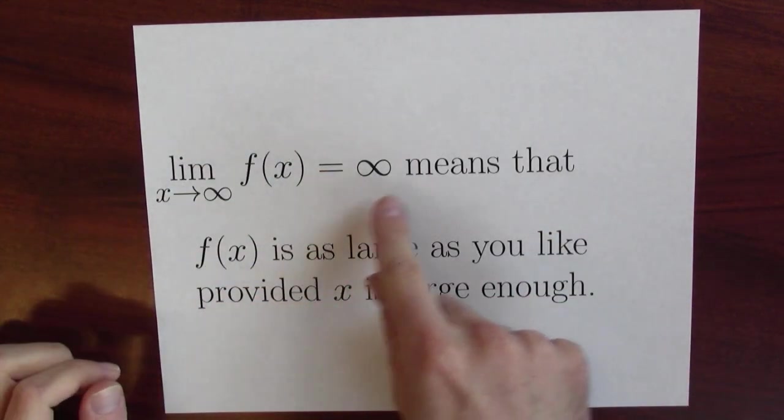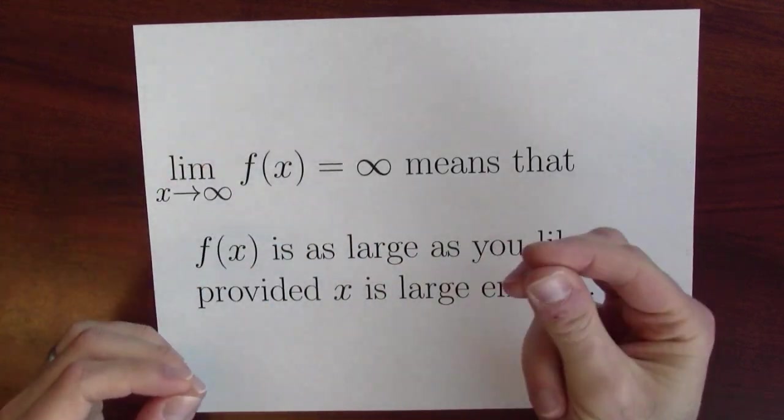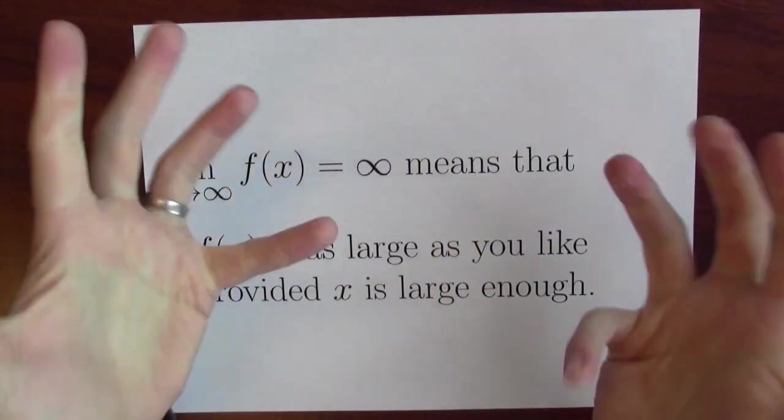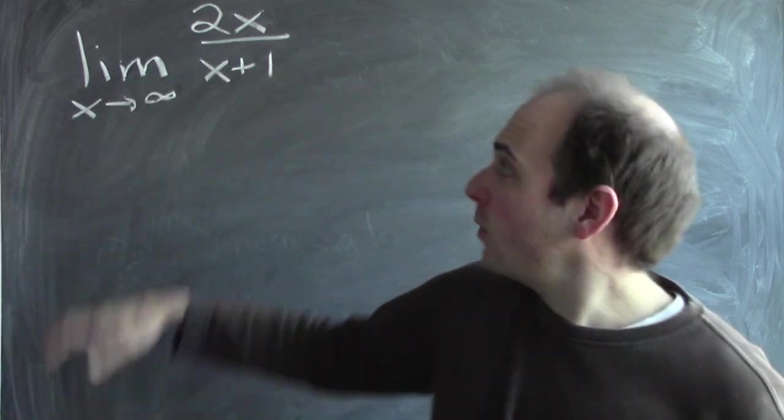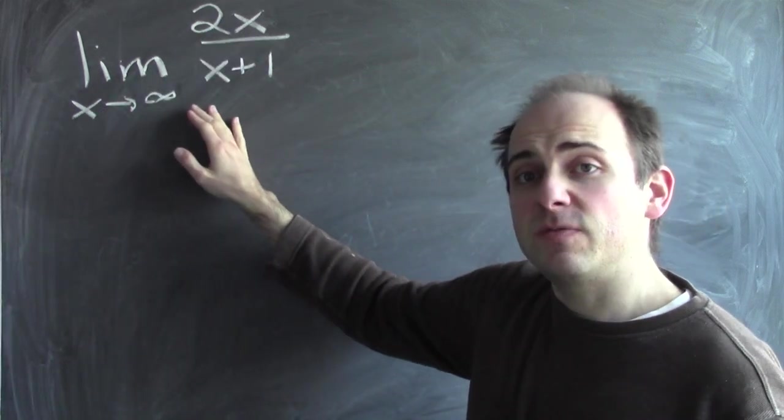Consistently, when we're talking about infinity in limits, we're never actually talking about a specific value. We're just talking about a value which is as big as you want it to be. Let's go do an example at the blackboard. Here's a question. What's the limit of 2x over x plus 1 as x approaches infinity?